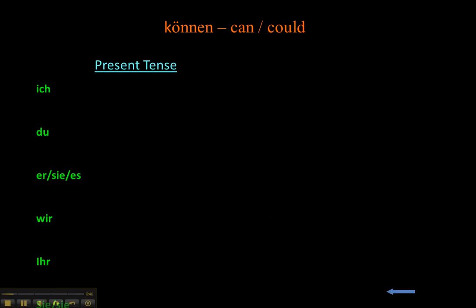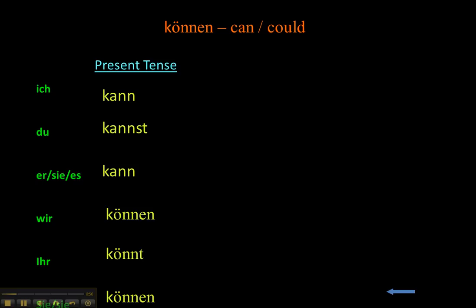So we'll start with können in the present tense. Ich kann, du kannst, er kann, wir können, ihr könnt, sie können. One thing typical of Modal-Verbs is that the first person and third person singular forms are the same — ich kann, er kann. And also the wir and the sie forms are also the same.